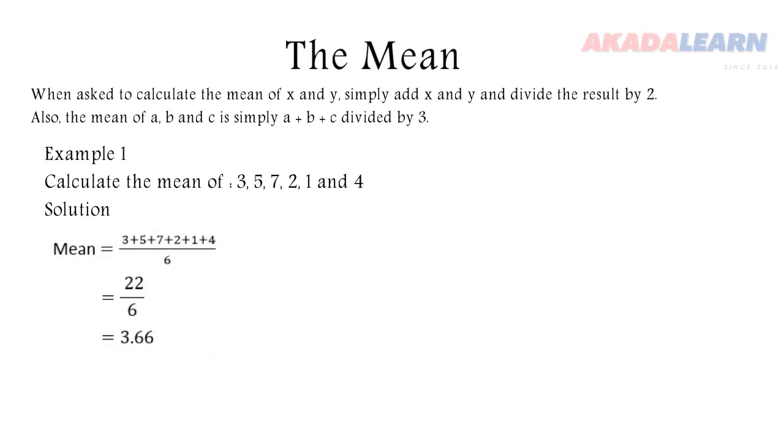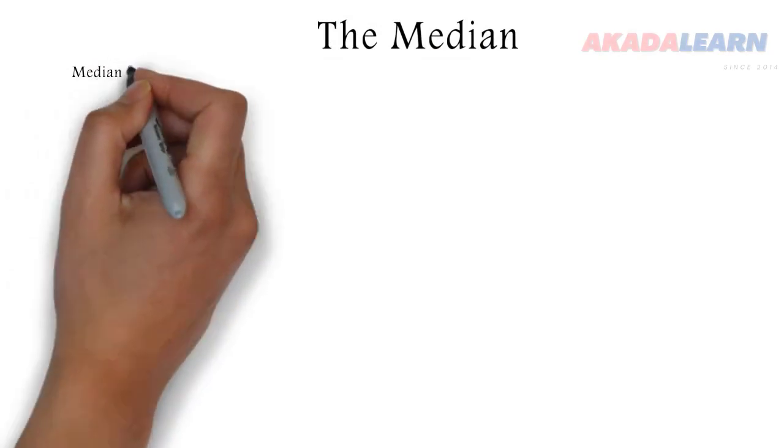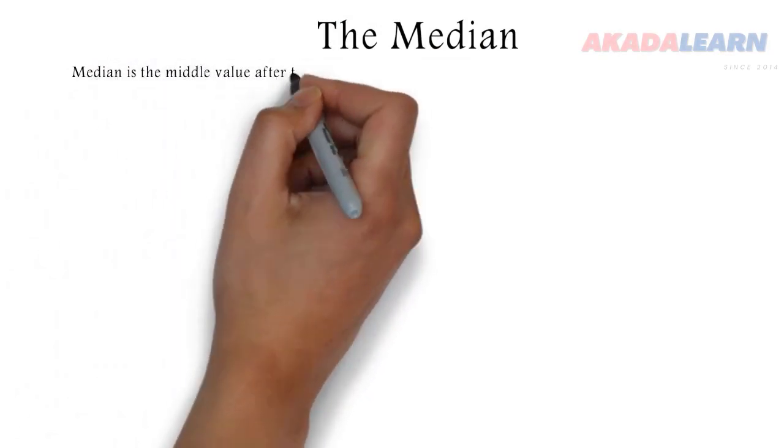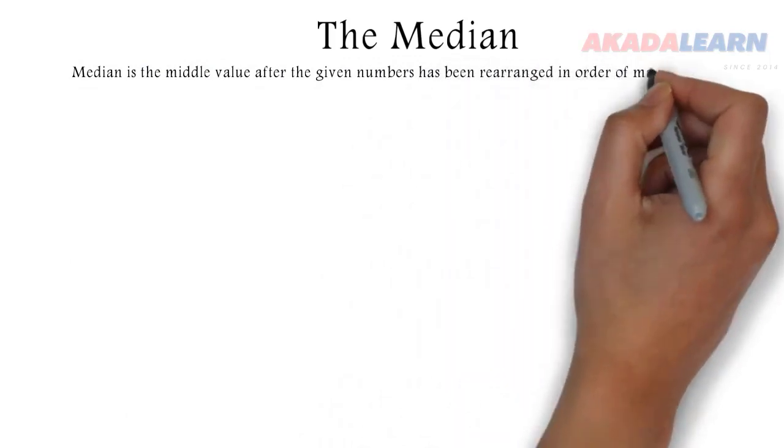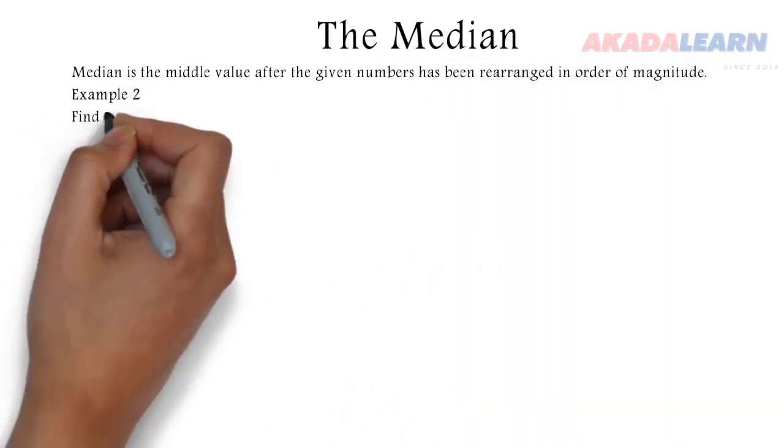Now let's move to the median. Median is the middle value after the given numbers has been rearranged in order of magnitude, that is either in increasing or decreasing order.